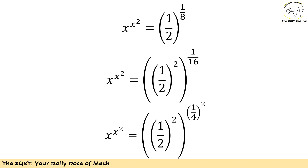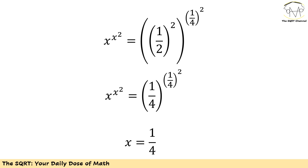Now I need to apply a little simplification. I am going to keep 1/2 as is but write 1/8 as 2 times 1/16, then write 1/16 as (1/4)². Now I am going to write (1/2)² as 1/4, and you can see that x is going to be 1/4 and we solve the problem.